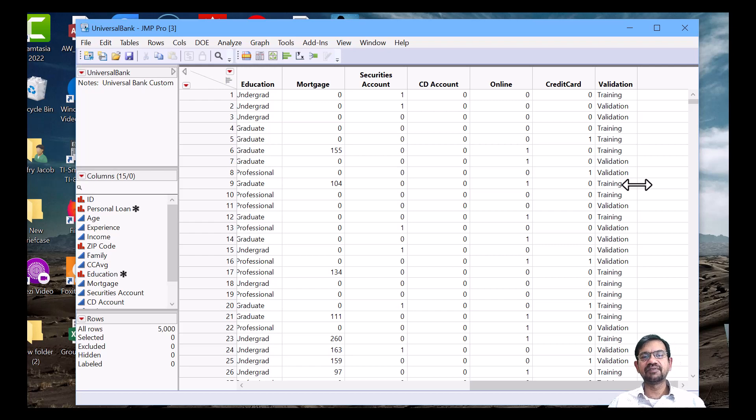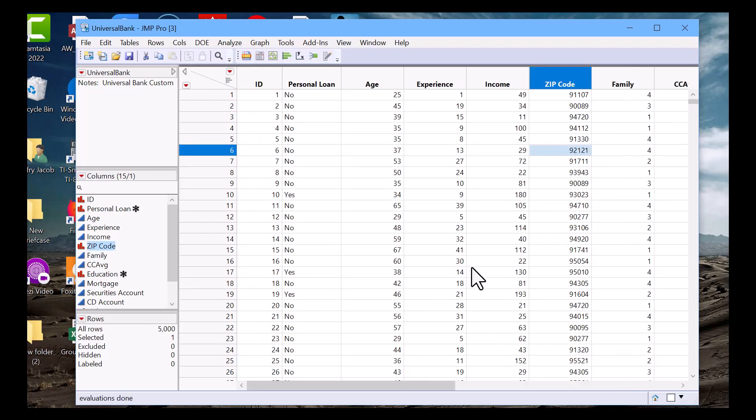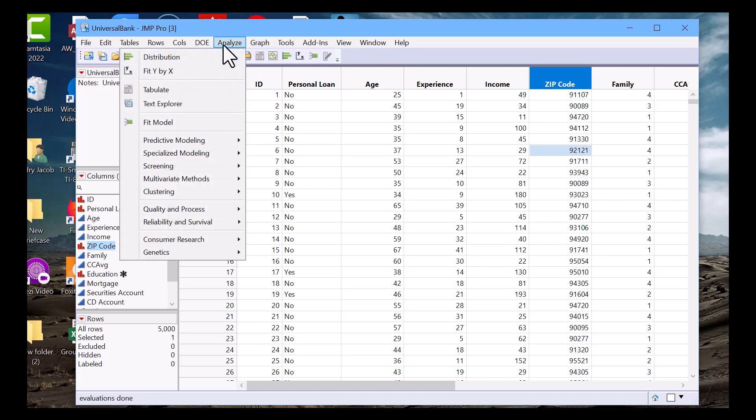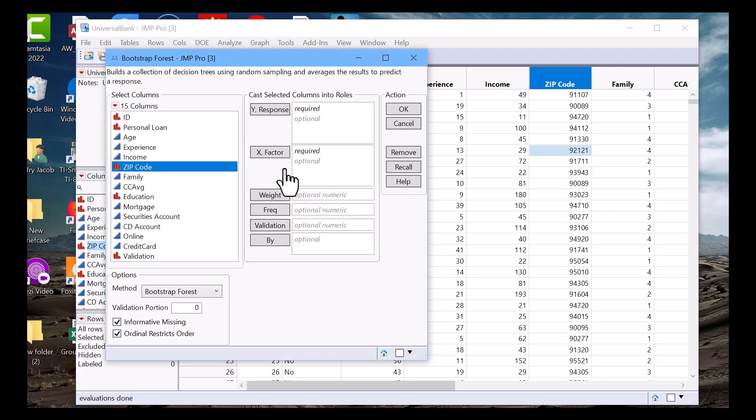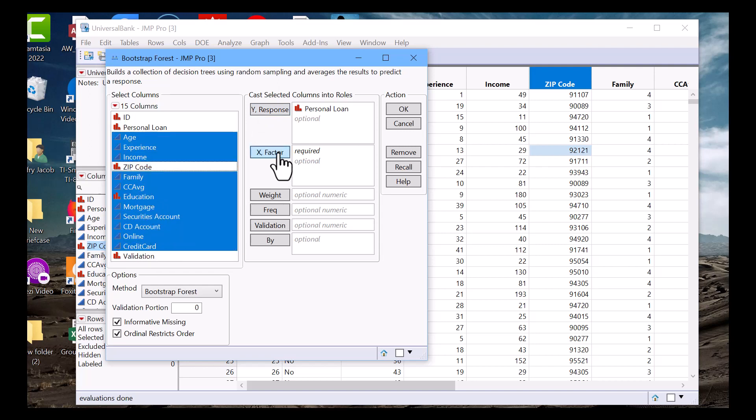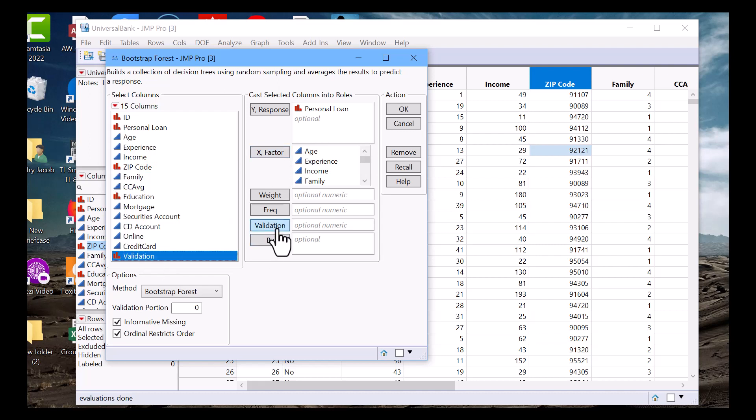To fit a random forest, or as JMP calls it bootstrapped forest, we go to Analyze, Predictive Modeling, and then Bootstrapped Forest. Here we can move our dependent variable to Y, we move our independent variables to X, and then we can move our validation column to Validation. The default method is bootstrap forest; we also have the option of boosted trees and other algorithms, but we'll keep it as bootstrapped forest.